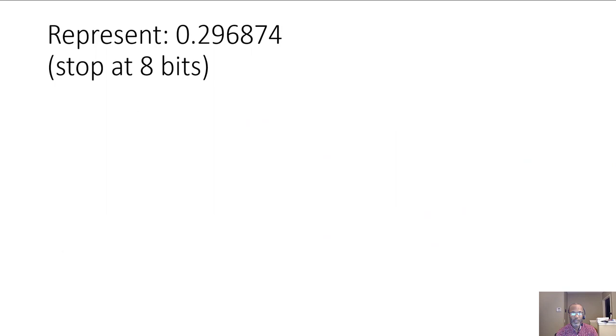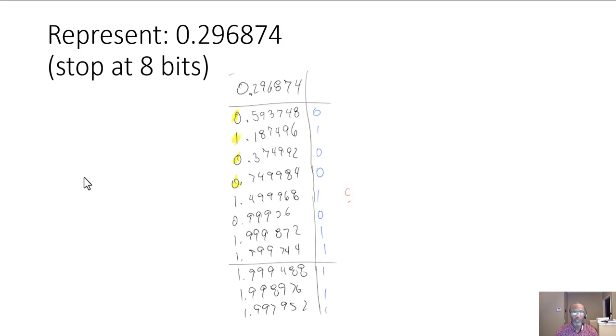So what series of bits can be used to represent the 0.296874? In this case, if we continued to double our 0.296874, if you started off with doubling it, you get your 0.59.